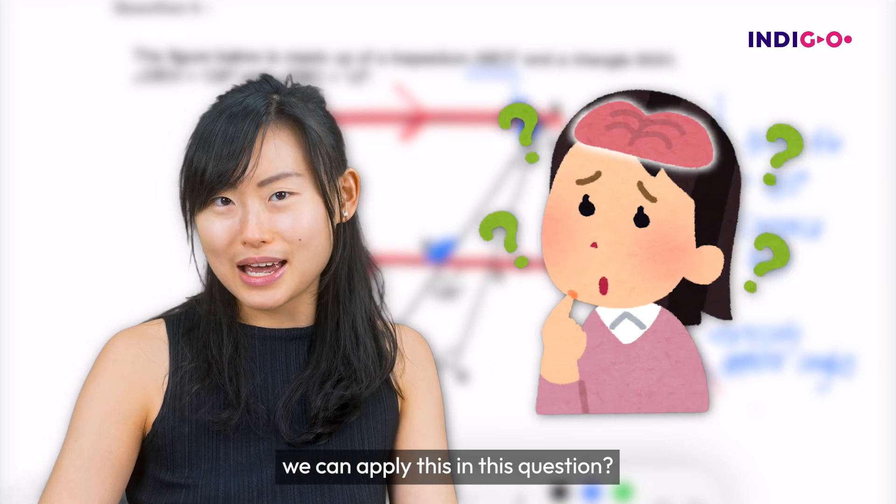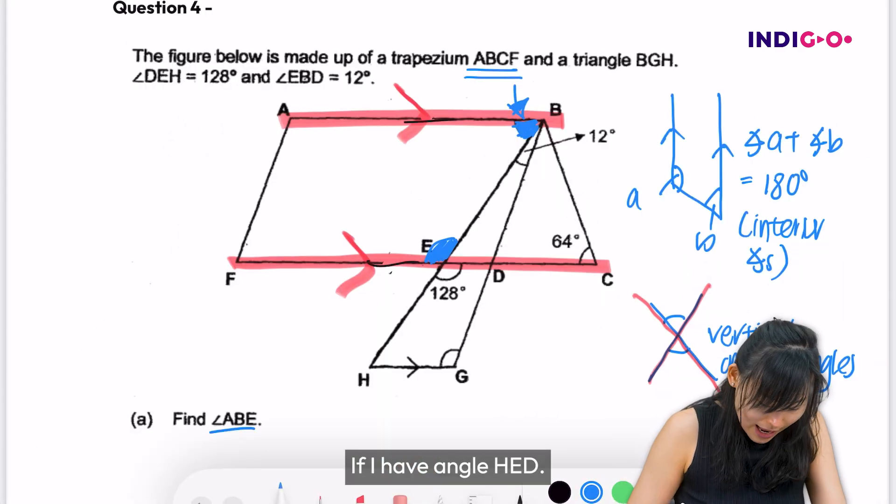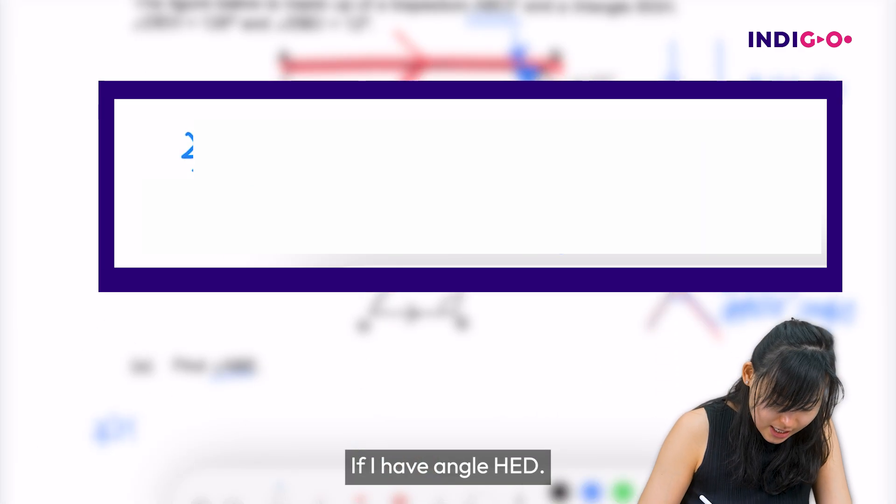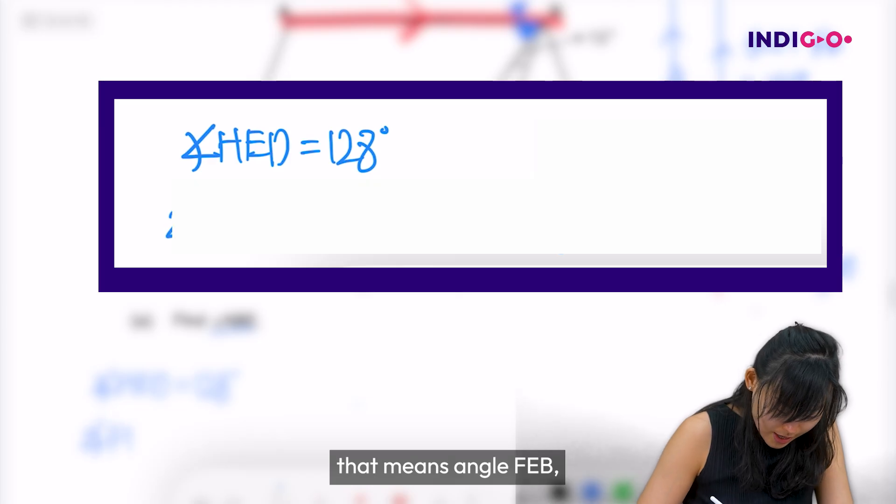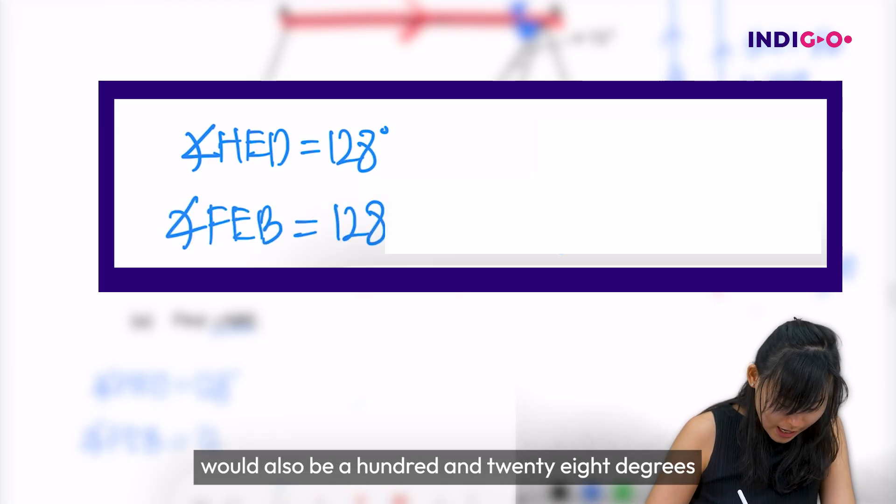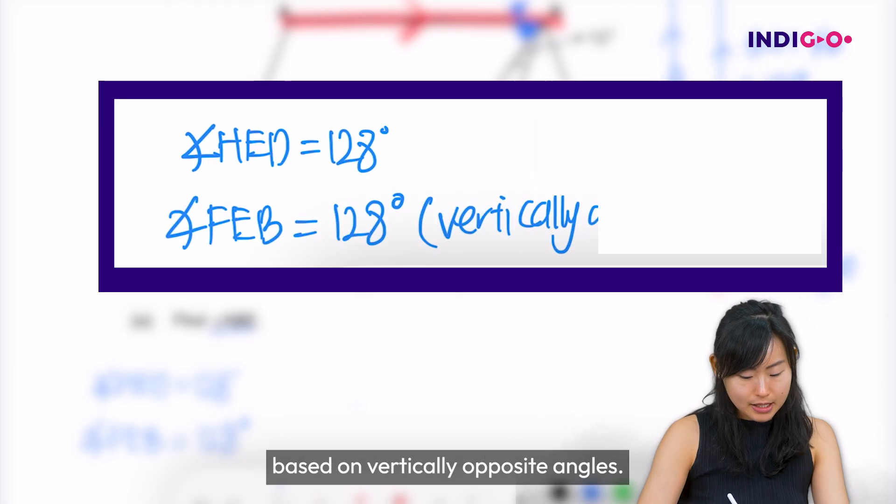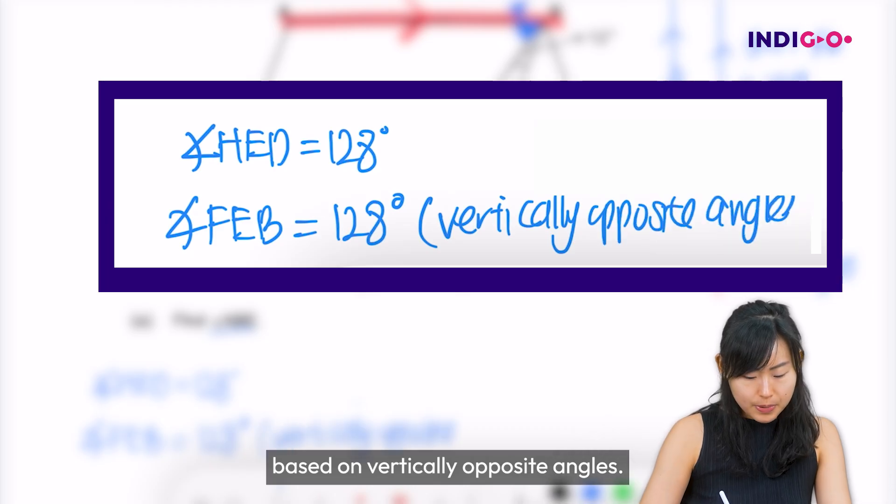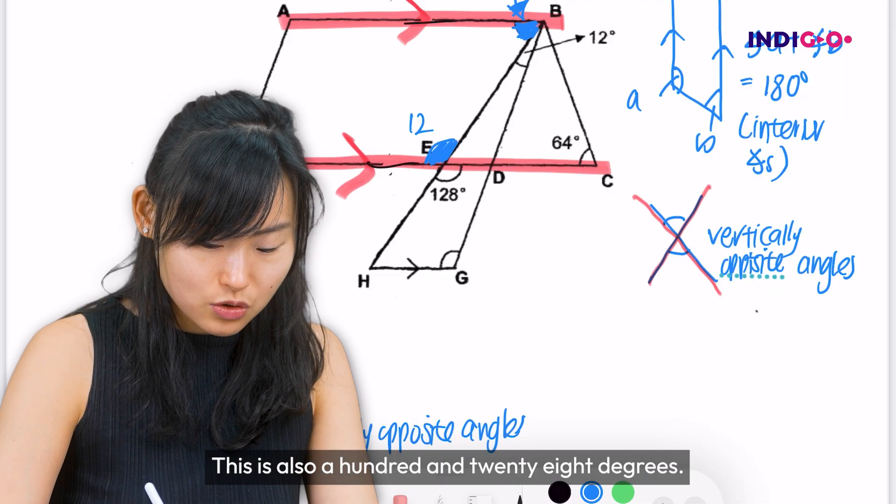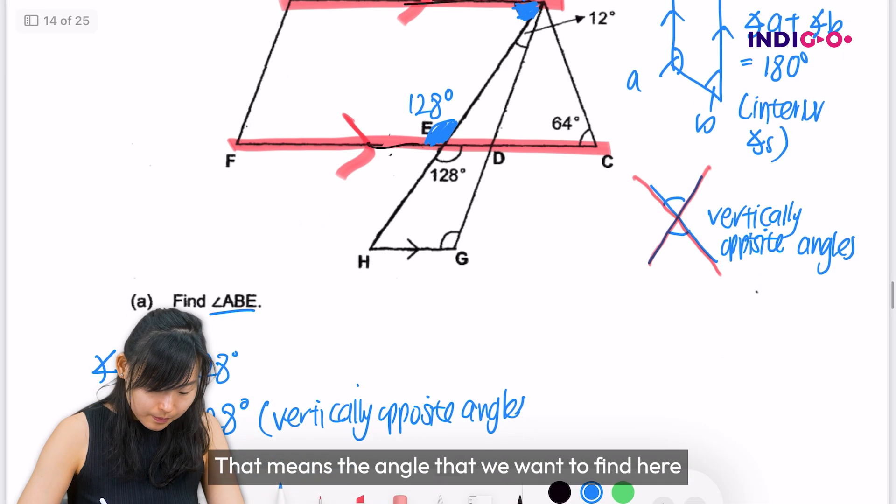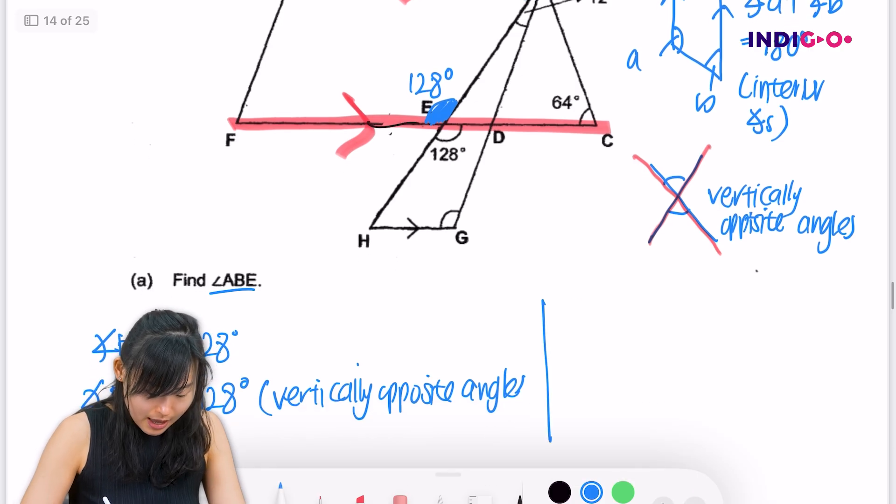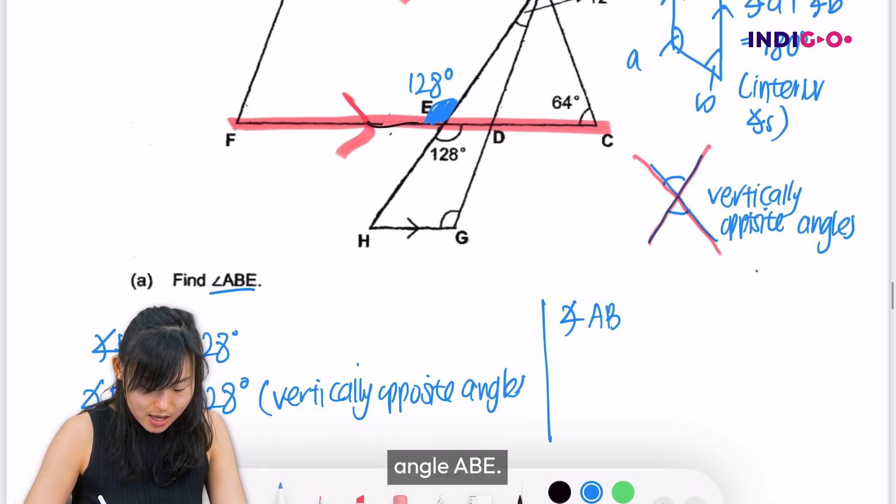So do you see how we can apply this in this question? If I have angle HED to be 128 degrees, that means angle FEB would also be 128 degrees based on vertically opposite angles. So let me just write it down here first. This is also 128 degrees. That means the angle that we want to find here, angle ABE.